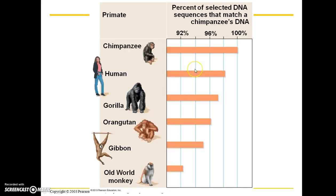This evidence points to the fact that chimpanzees are our closest living relatives. That does not mean we evolved from chimpanzees, but it does mean that humans and chimpanzees share a common ancestor. Millions of years ago we branched off from a common ancestor, and chimpanzees shared that same common ancestor but took a different evolutionary path.